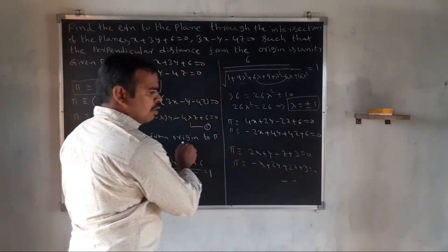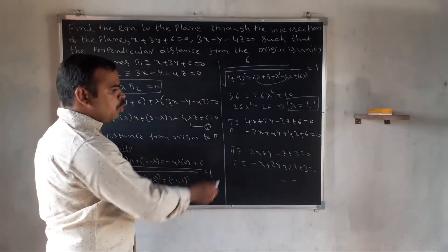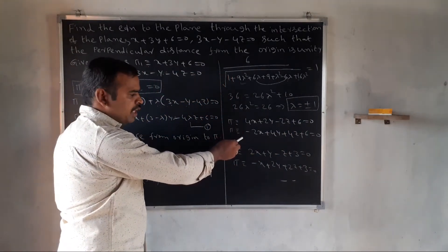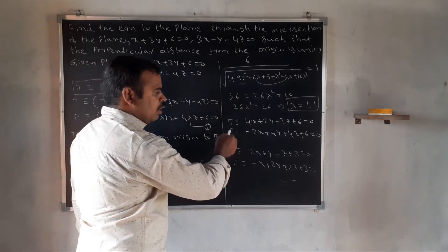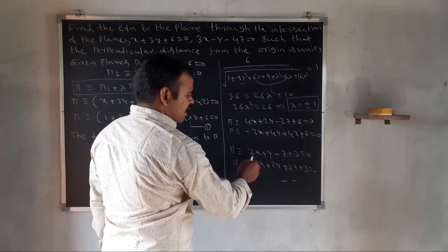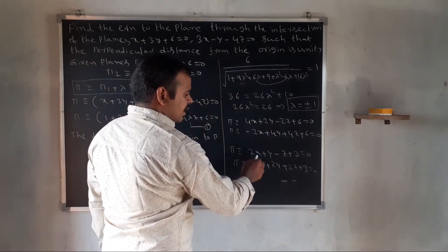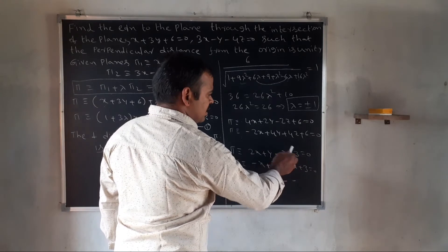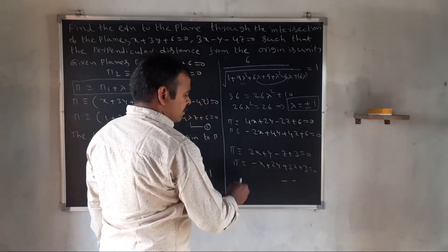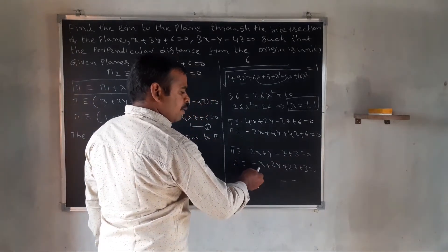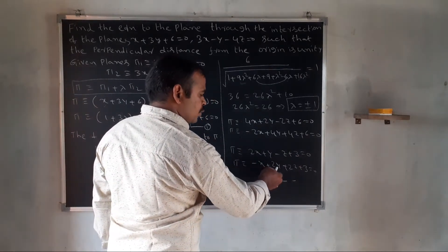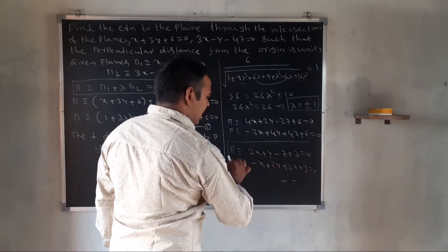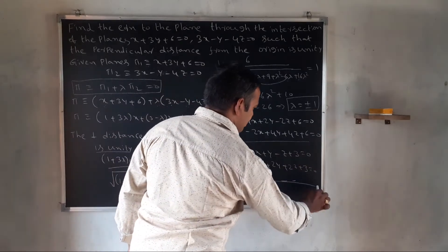Substituting back into equation 1: for lambda equals positive 1, the plane equation is 2x plus y minus z plus 3 equal to 0. For lambda equals negative 1, the plane equation is minus x plus 2y plus 2z plus 3 equal to 0. These are the required plane equations.